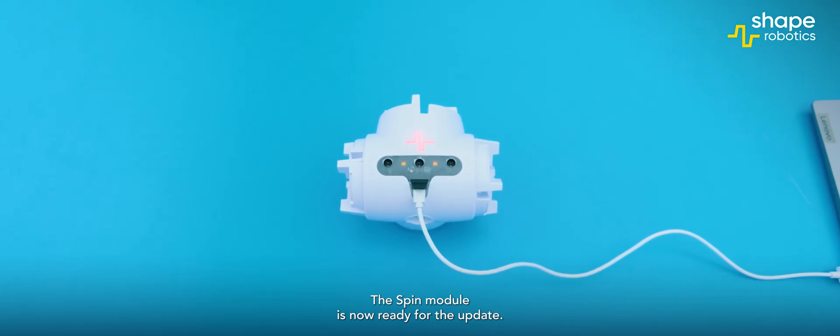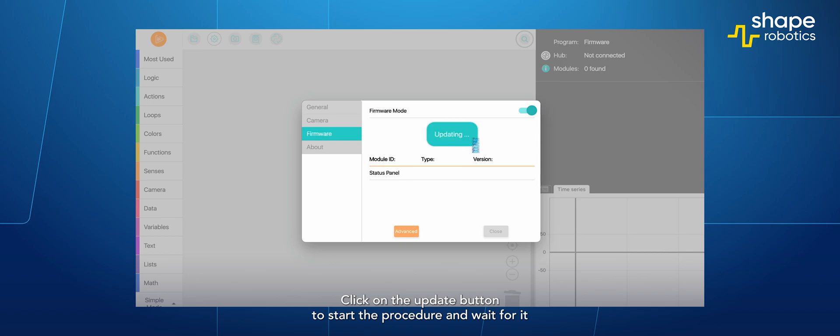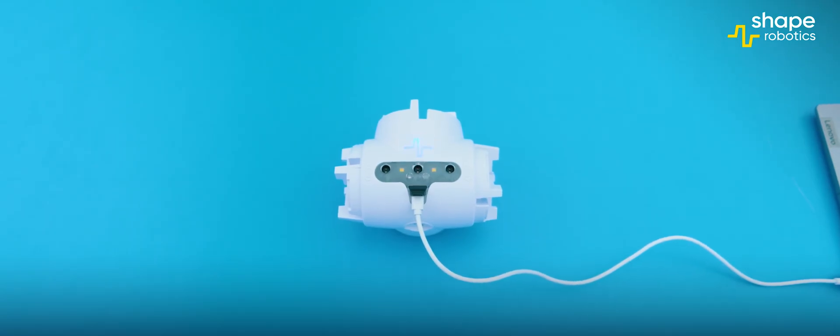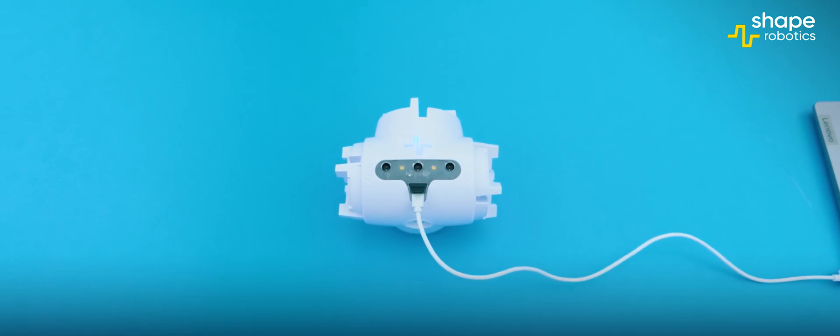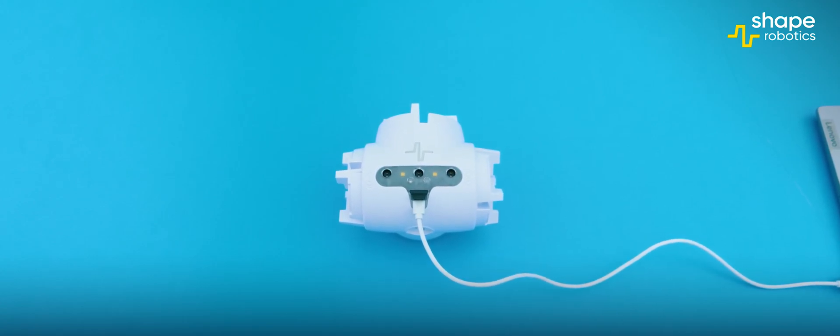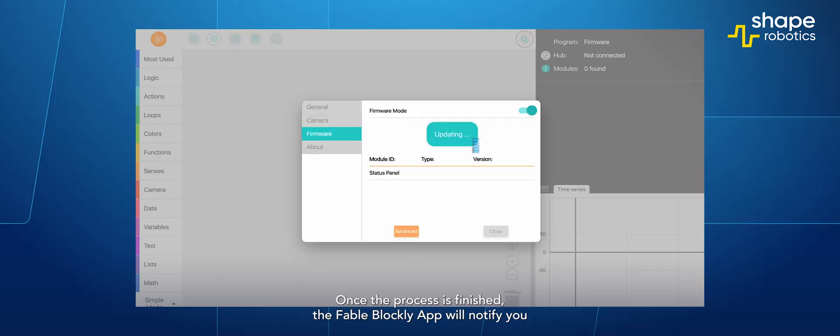The spin module is now ready for the update. Click on the update button to start the procedure and wait for it to complete. Once the process is finished, the Fable Blockly app will notify you and your spin module has now the latest firmware version.